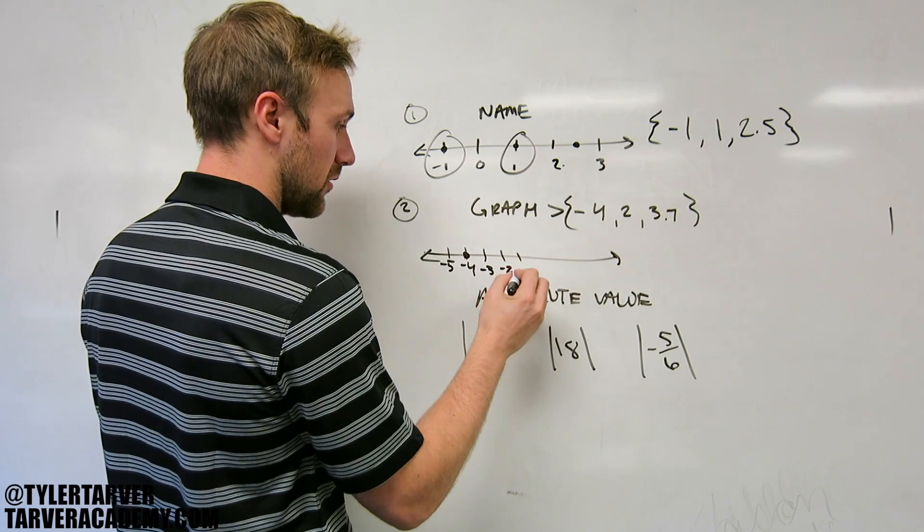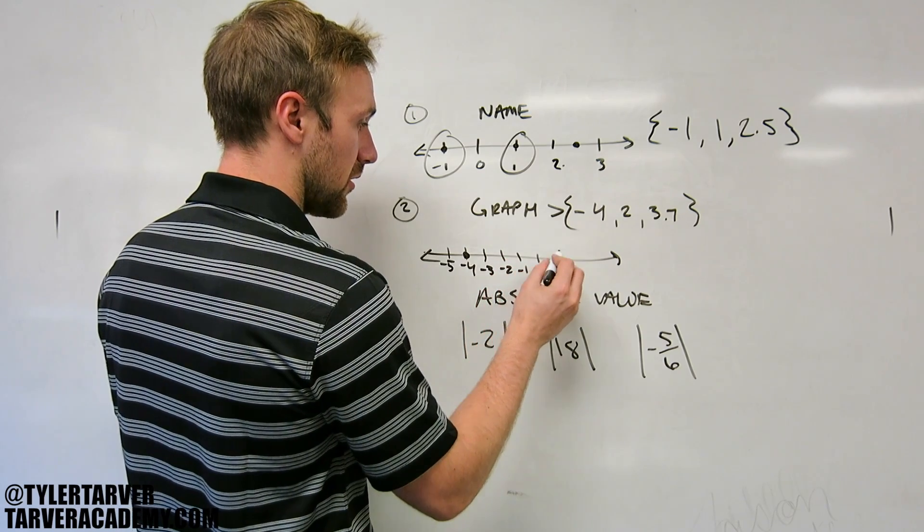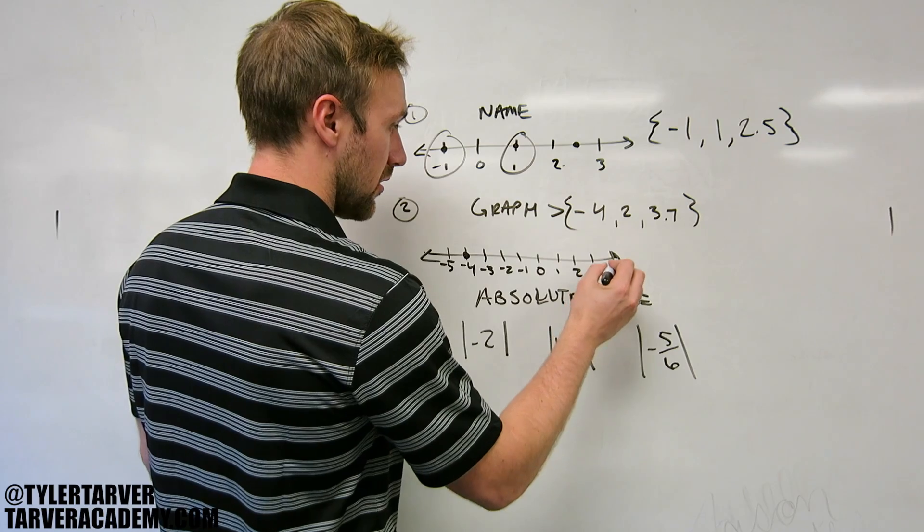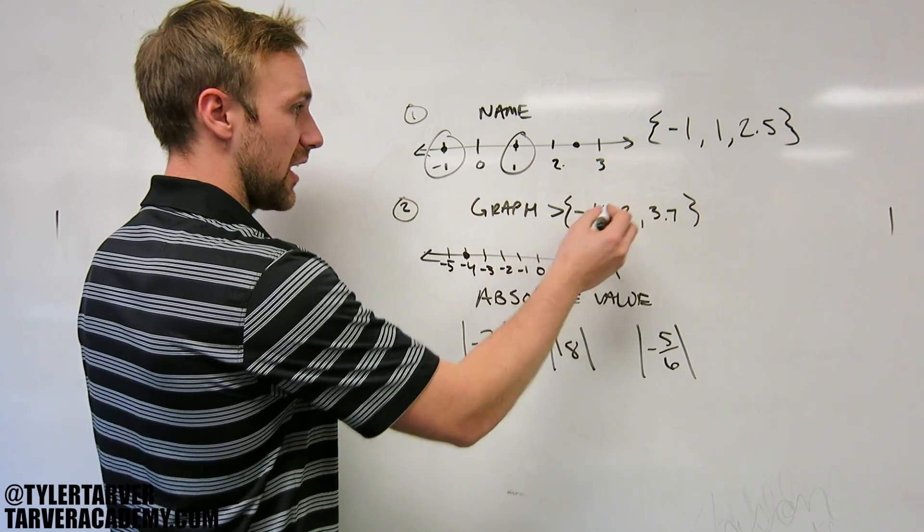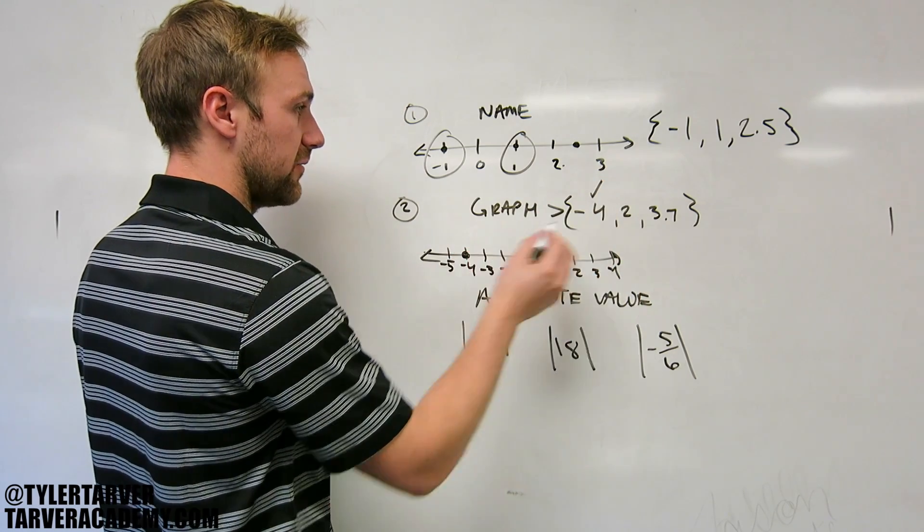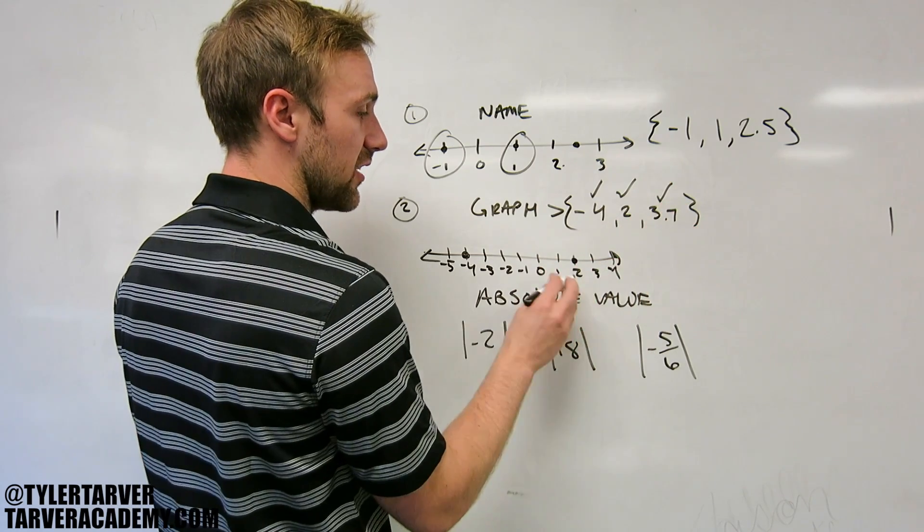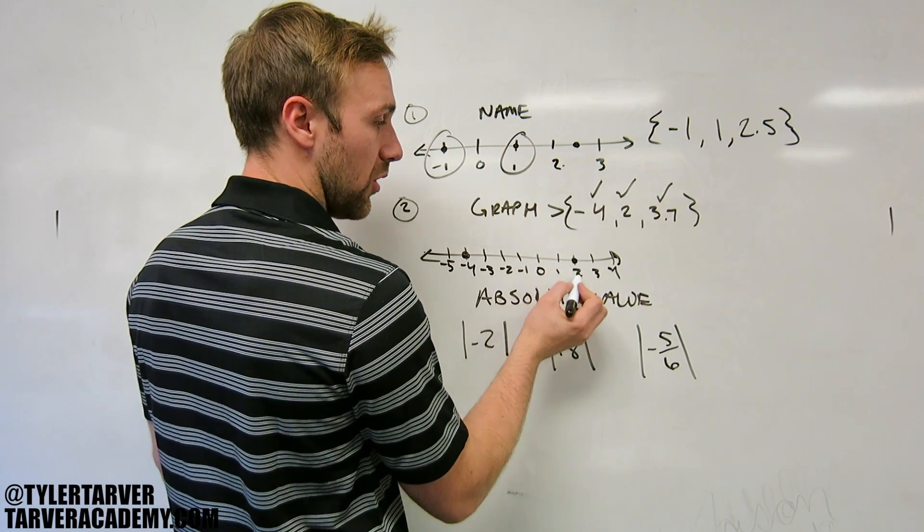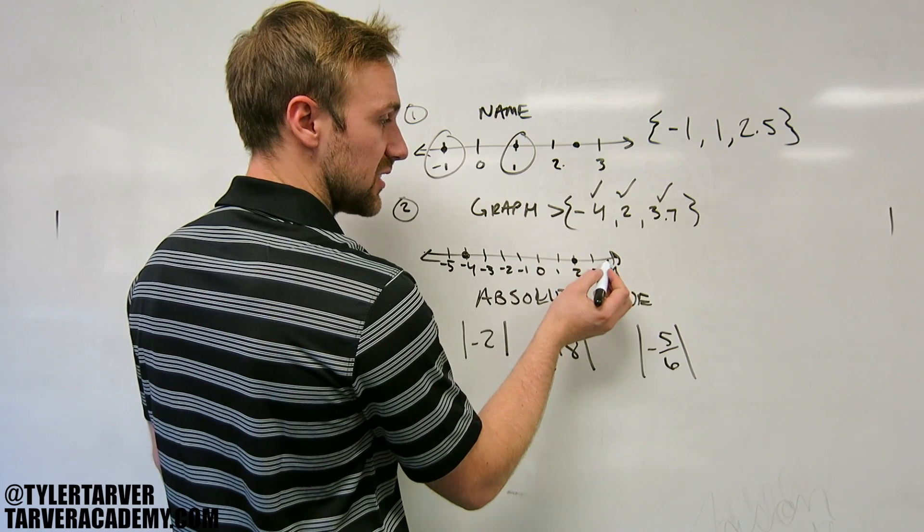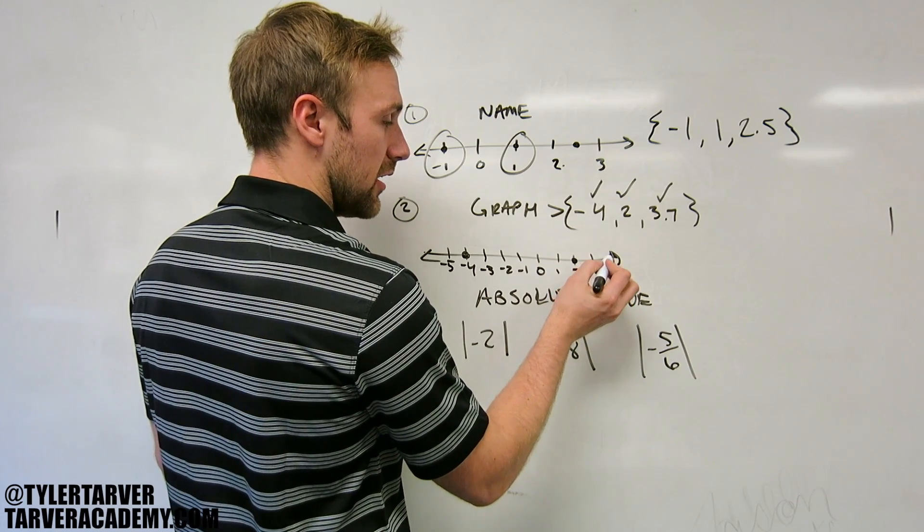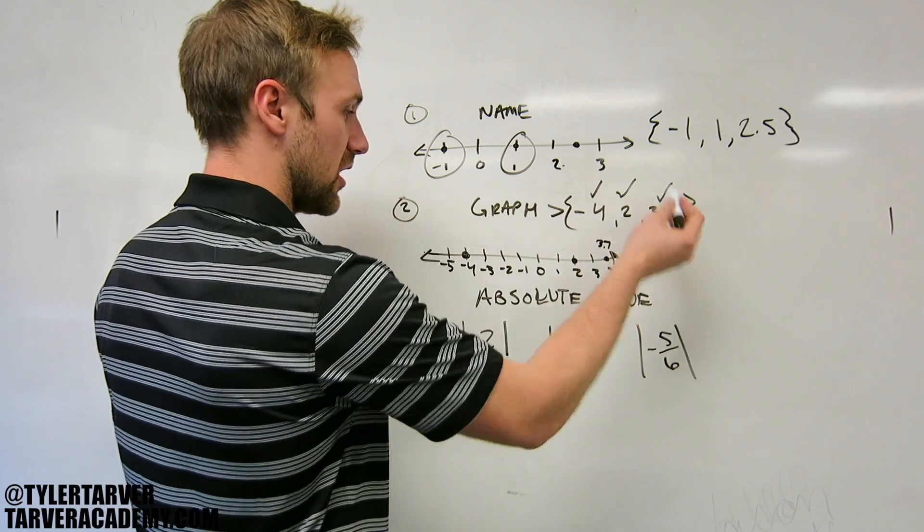Negative three, negative two, negative one, zero, one, two, three, four. So I've got my negative four, check, put it right there on negative four. Two, check. And then 3.7, I want to go counting up one, two, three, and I know 0.7 is going to be a little bit over halfway, so that's my 3.7. You're good, check.